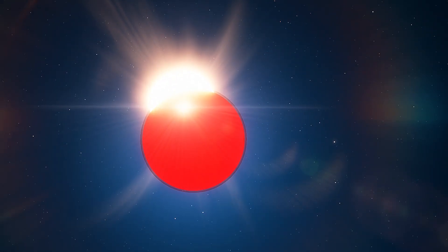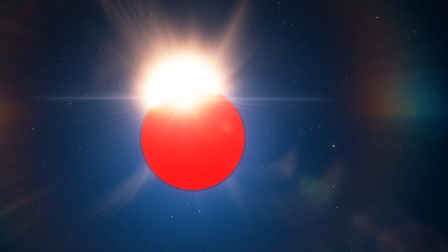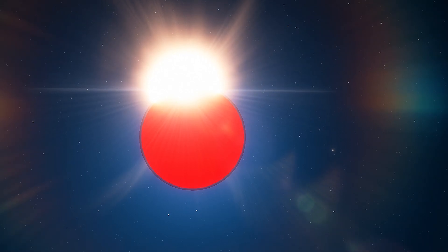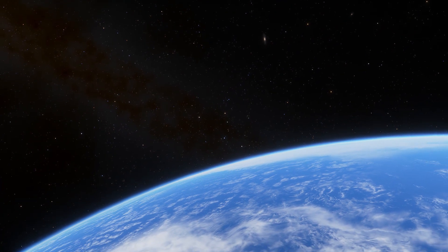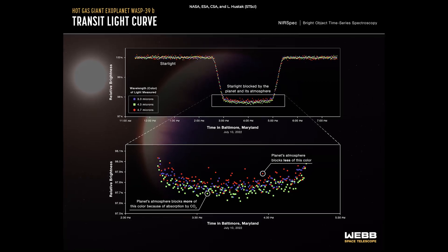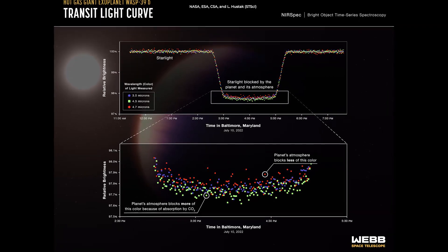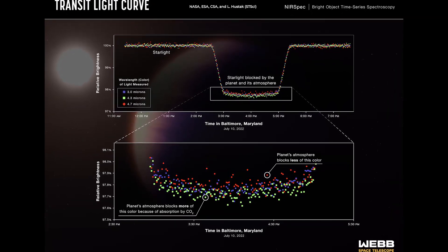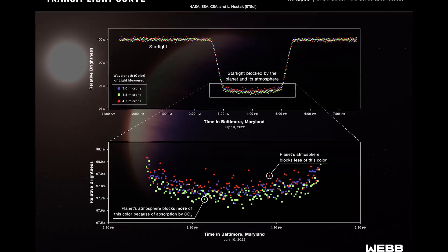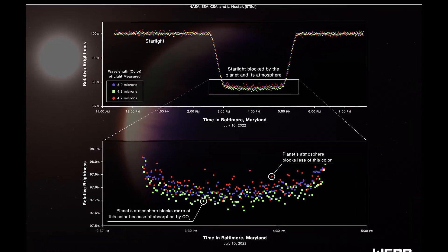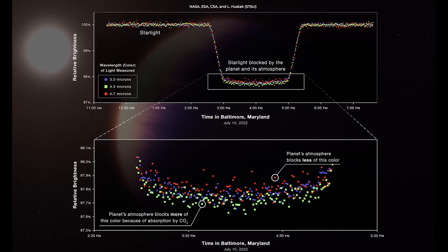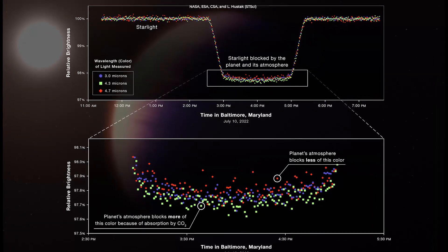So, what happens is when the light from WASP-39b's star passes through the exoplanet's atmosphere to eventually reach us here on Earth, the exoplanet's atmosphere filters out some colors. Depending on what colors it filters out, scientists can know what the atmosphere is composed of, how thick it is, and whether there are clouds because different gases absorb different combinations of colors.